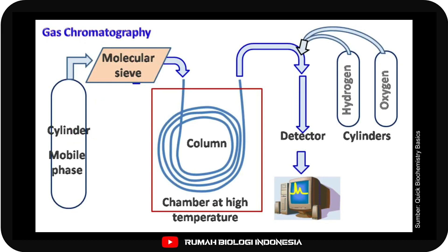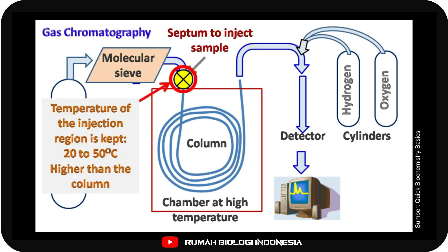Just before the column, there is a septum that allows injection of the sample. The temperature of the injection region is kept 20 to 50 degrees Celsius high as compared to the column. This allows rapid volatilization of the sample.